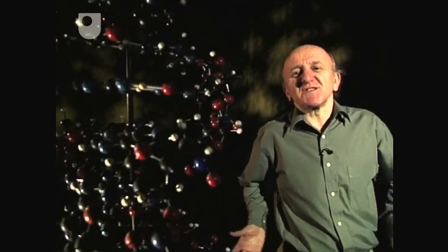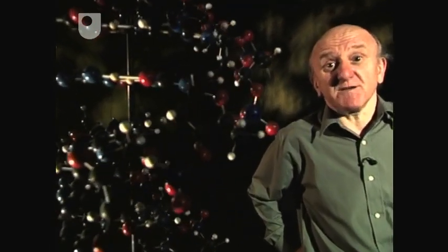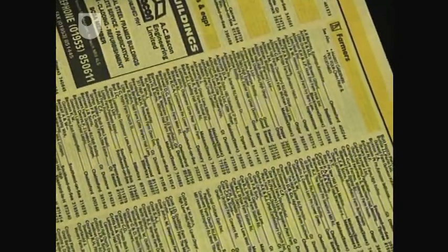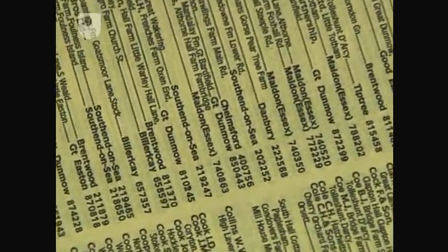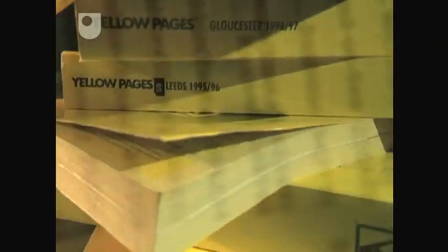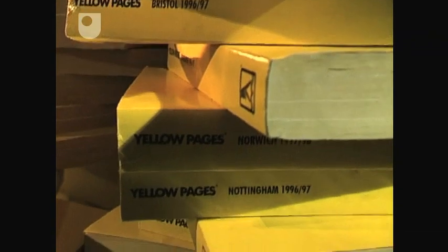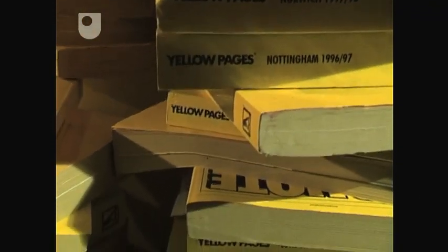Numbers like that don't mean very much to me. So how can we put numbers of that sort into some perspective? Take a telephone directory and imagine the whole thing composed of very tiny print, and that each letter and each digit corresponds to a base pair. Well, to get 3 billion, you'd need a couple of hundred or so different directories.